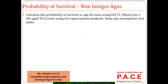We will look at a numerical involving computing the probability of survival when non-integer ages are involved. Calculate the probability of survival to age 60 exact using ELT 15 males for a life aged 45.5. So currently the life is aged 45.5 and we are looking at survival up to 60, which means we want to compute 14.5 p 45.5.